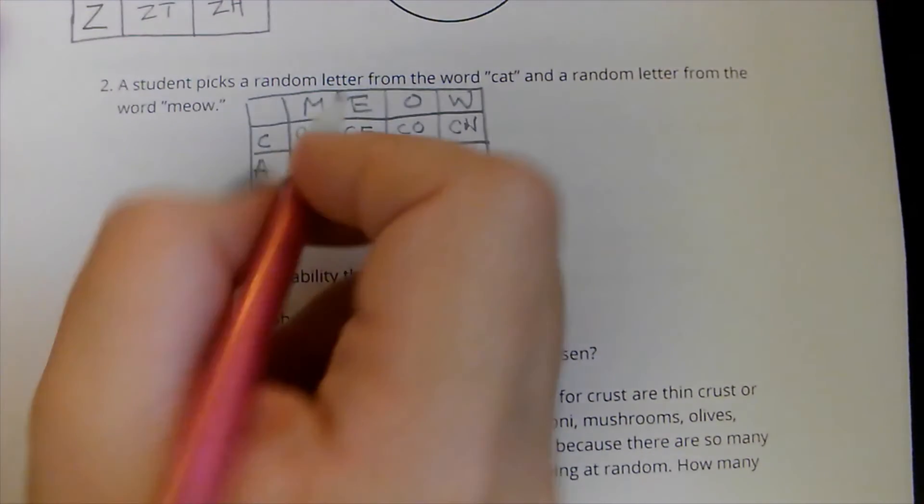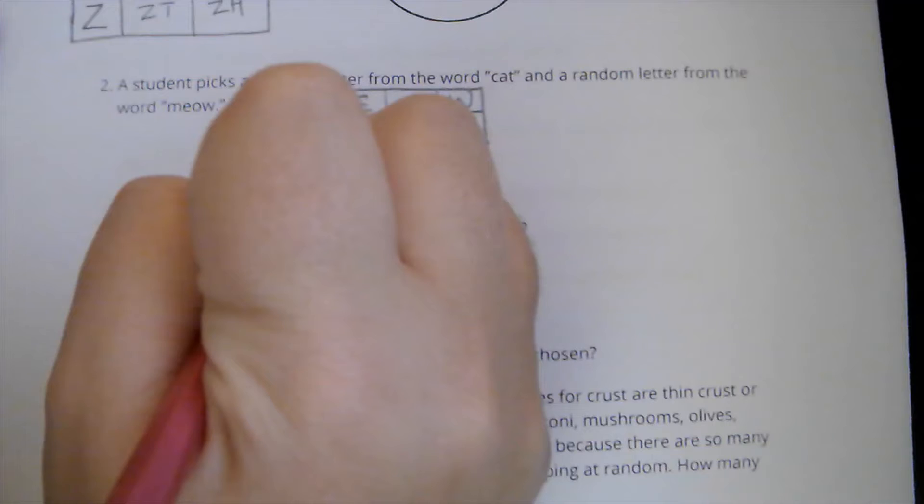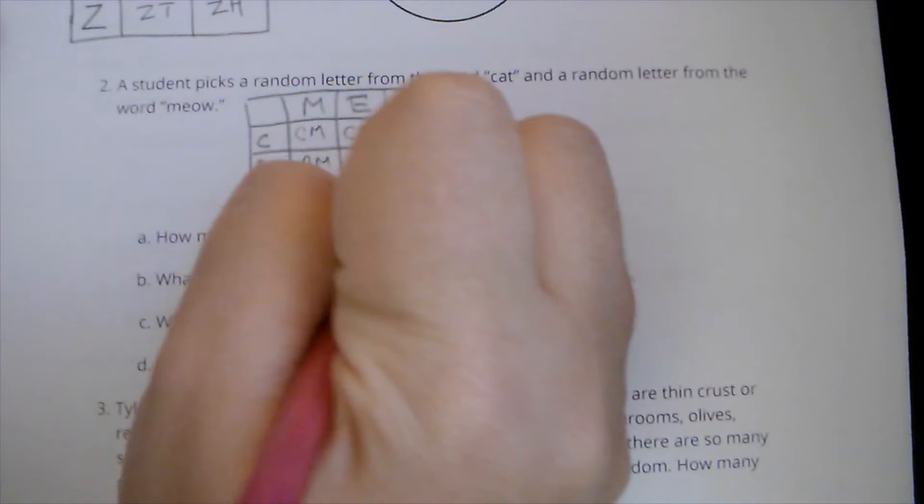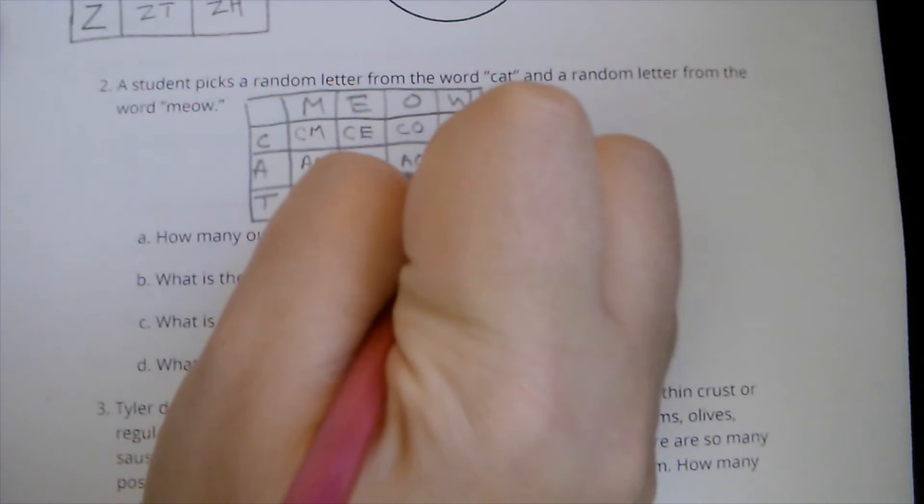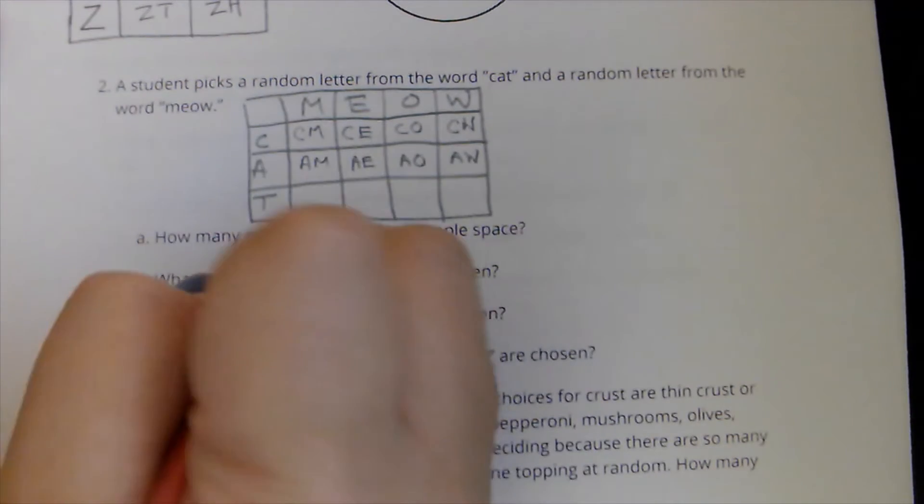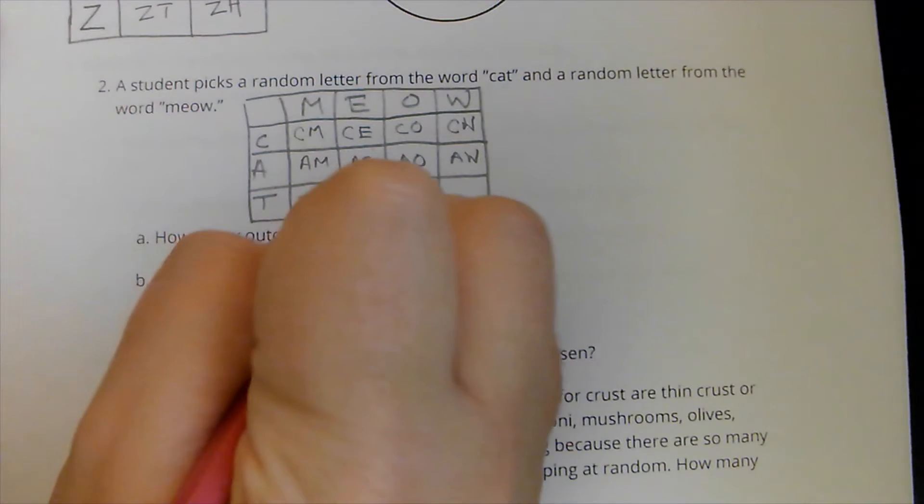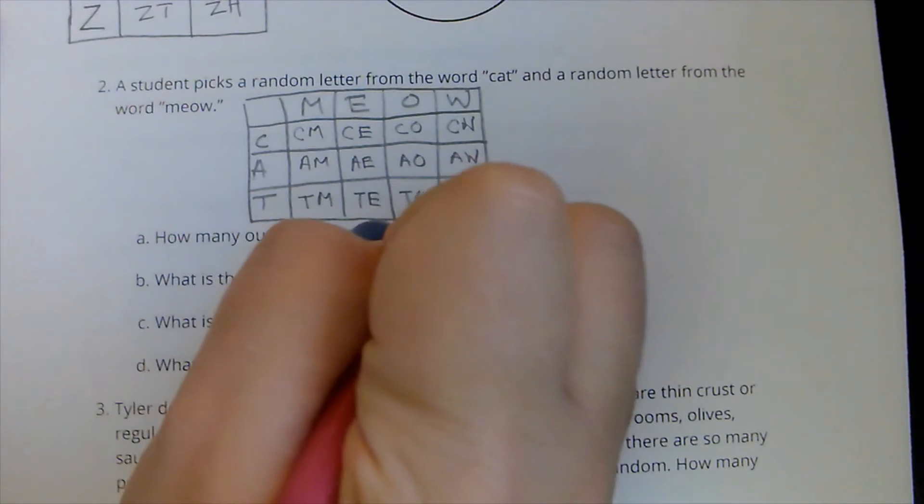I can do the same thing with A. I can get an A, M, an A, E, an A, O, an A, W. I could get a T, M, a T, E, a T, O, and a T, W.